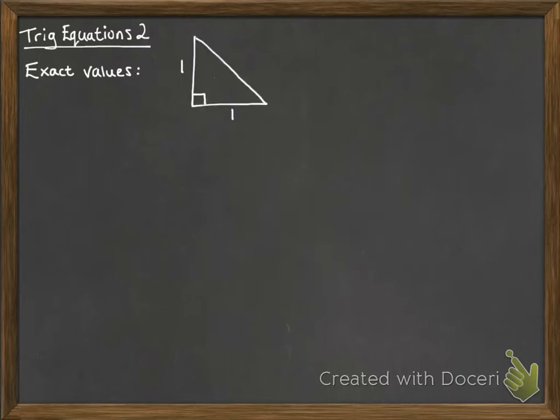These come from what we call identity triangles, or unit triangles sometimes. We have this triangle here, which is an isosceles triangle with sides of 1. That means that angle there is 45 degrees, and the hypotenuse is the square root of 2, just using Pythagoras. From there, we can get some useful values for sine, cos, and tan.